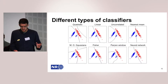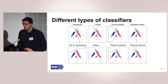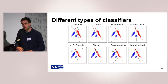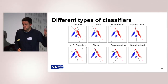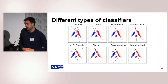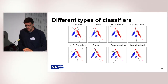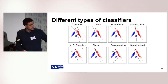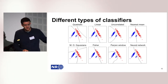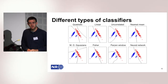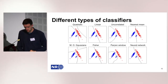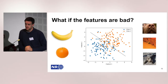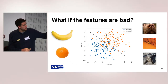There are a bunch of these classifiers and they all have different properties, and they all draw some line in this feature space. The work on classifiers has been very good lately. But the problem is when the features are bad — where should they draw the line?